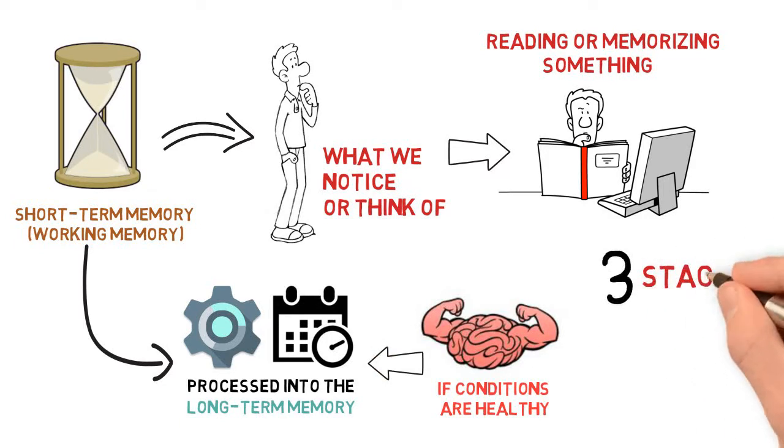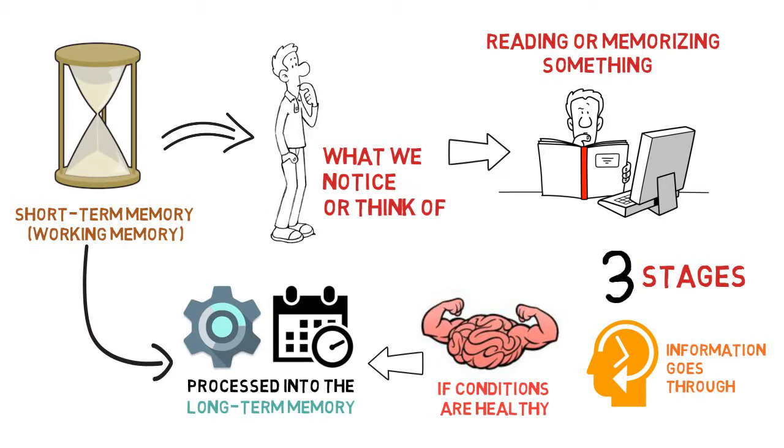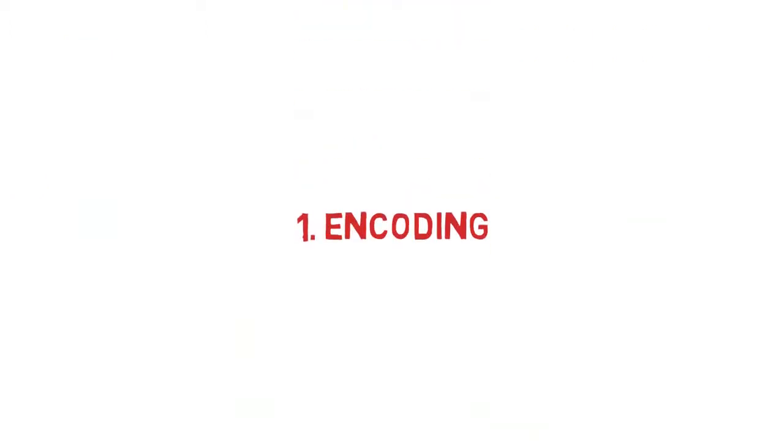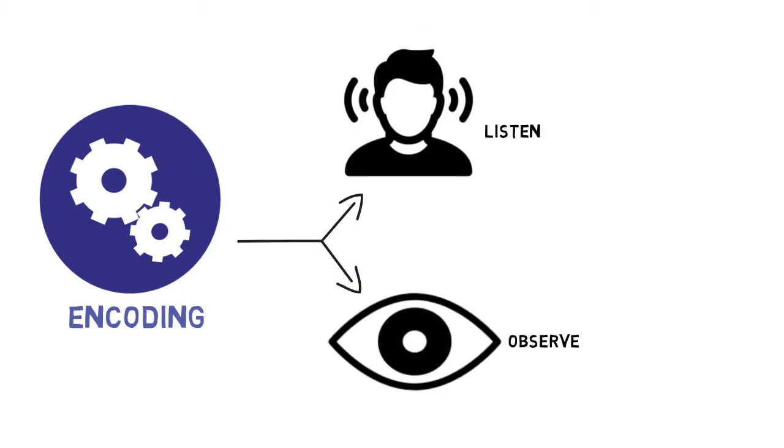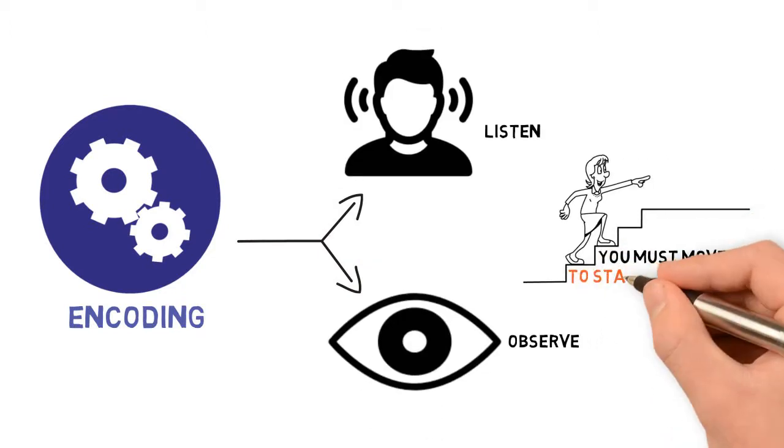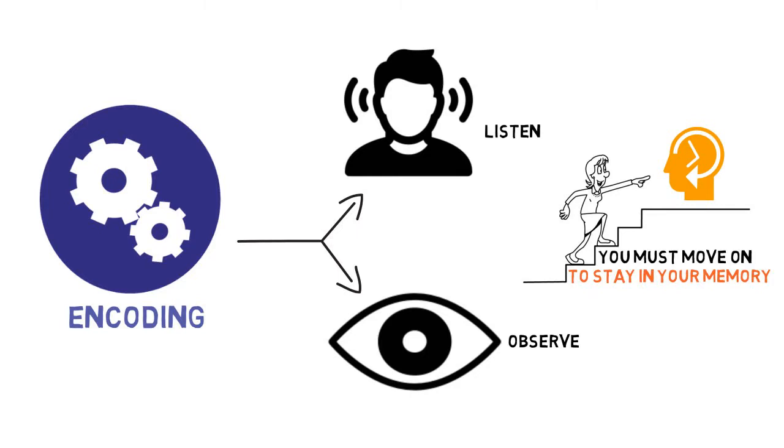Here are the three stages that information goes through before it's processed into the long-term memory. Number one, encoding. Encoding happens when you listen or observe something, but you must move on to the next two stages for it to stay in your memory.